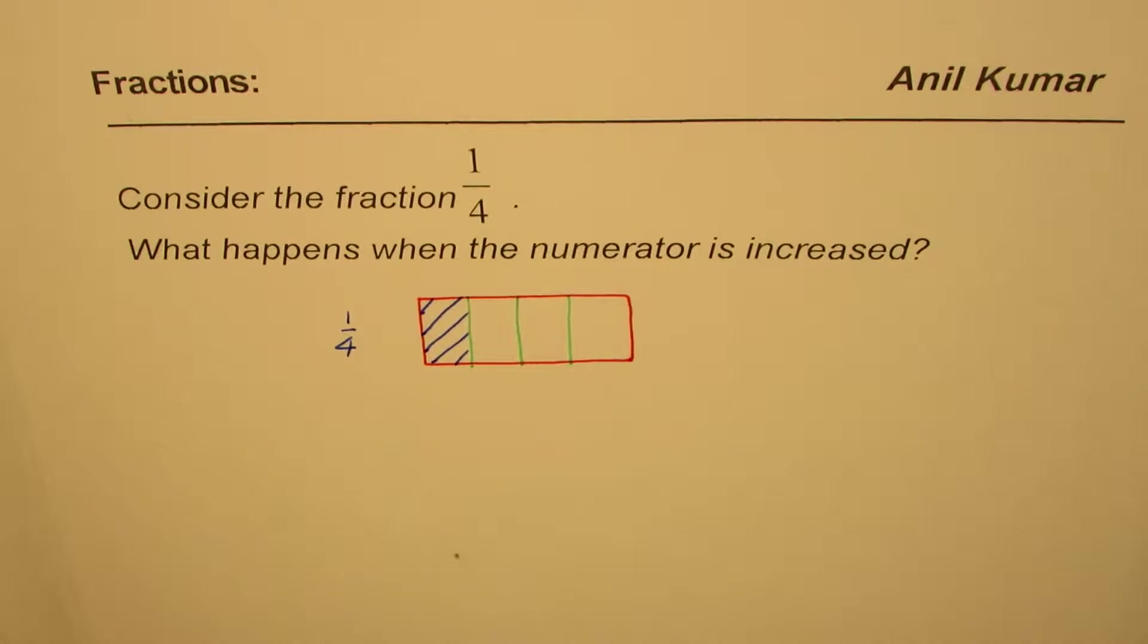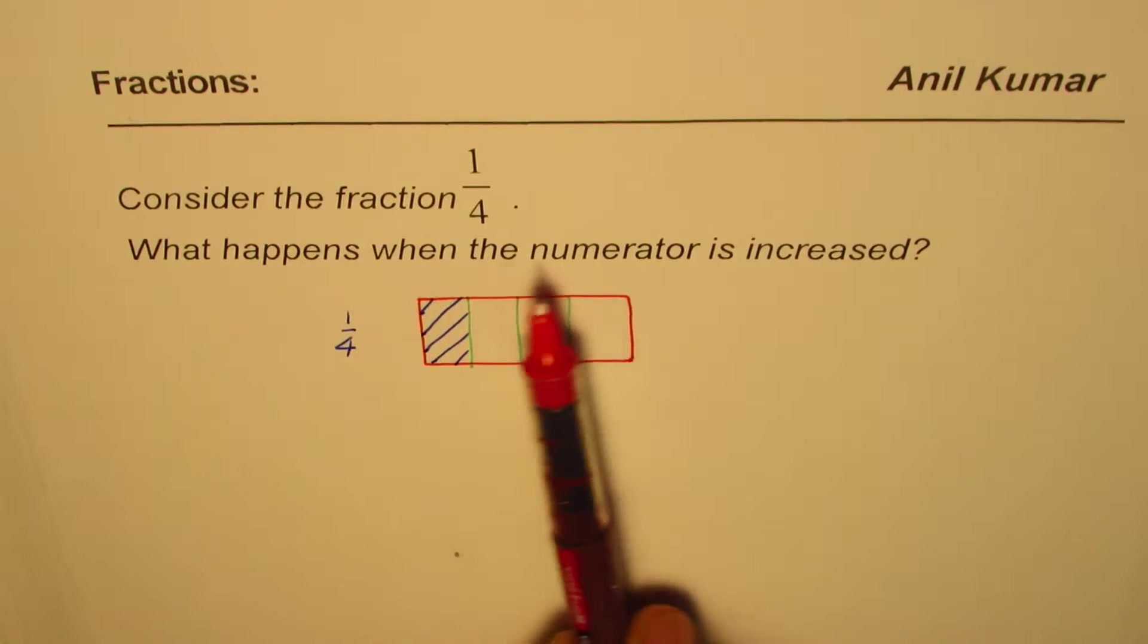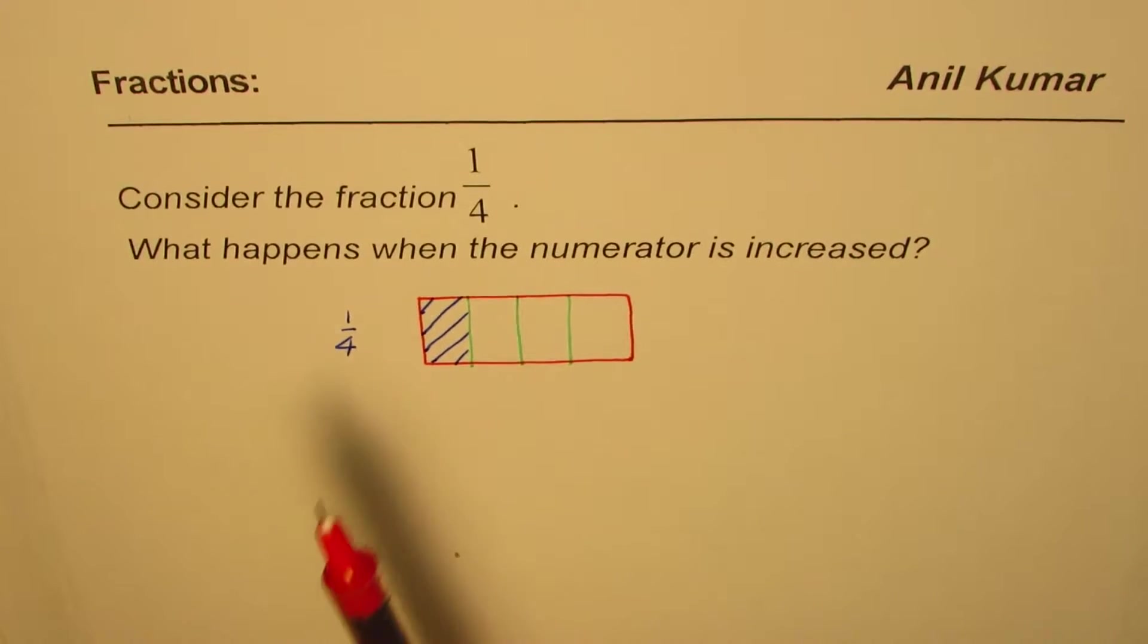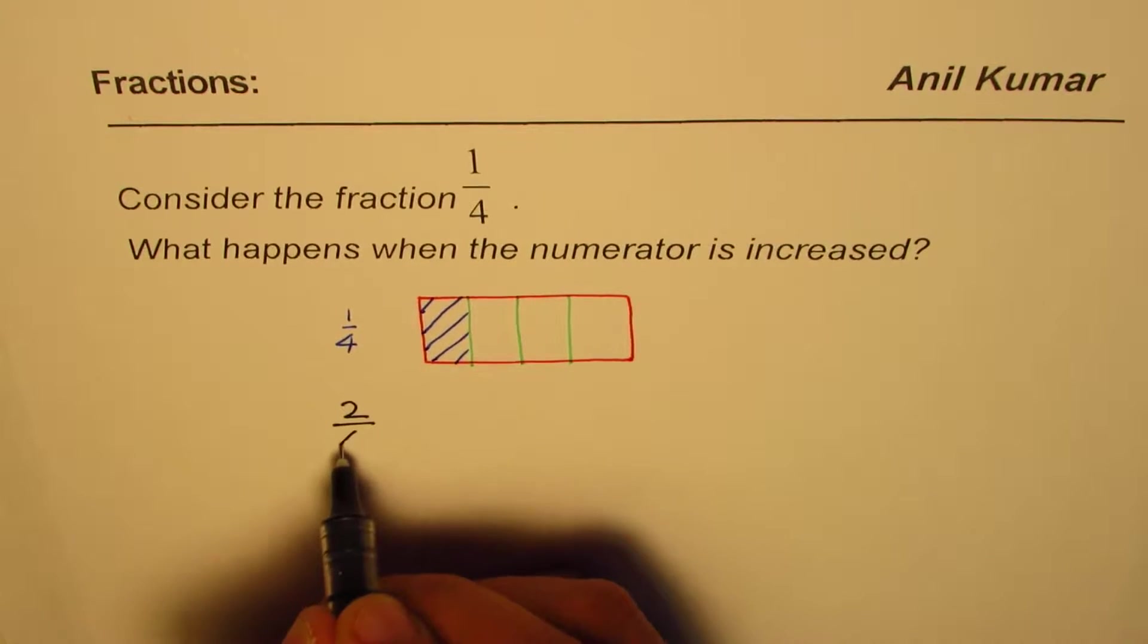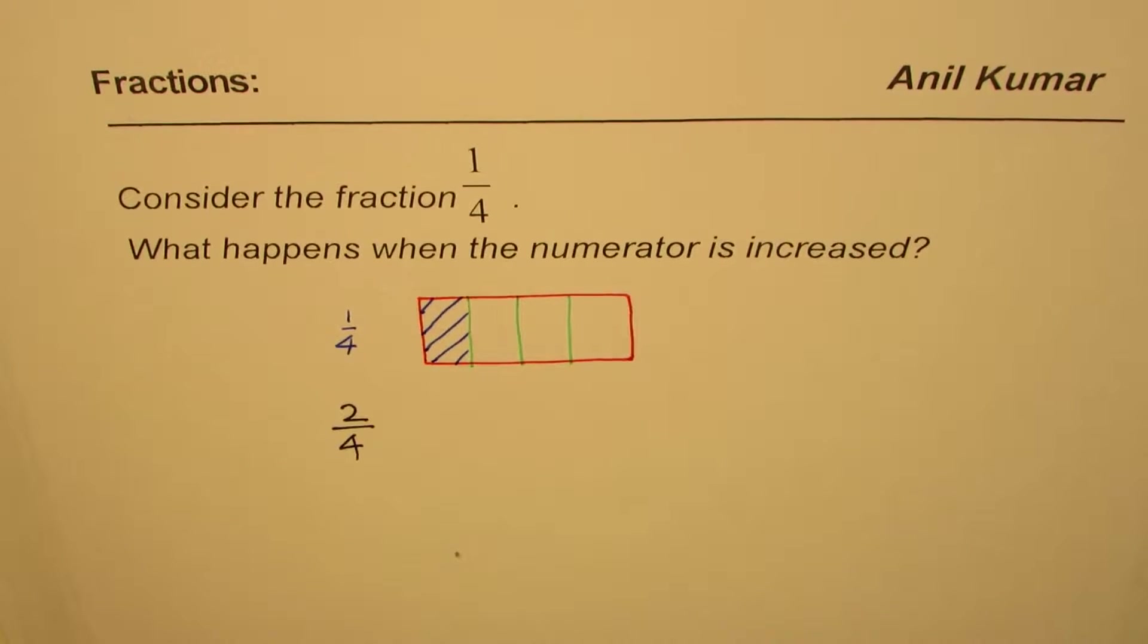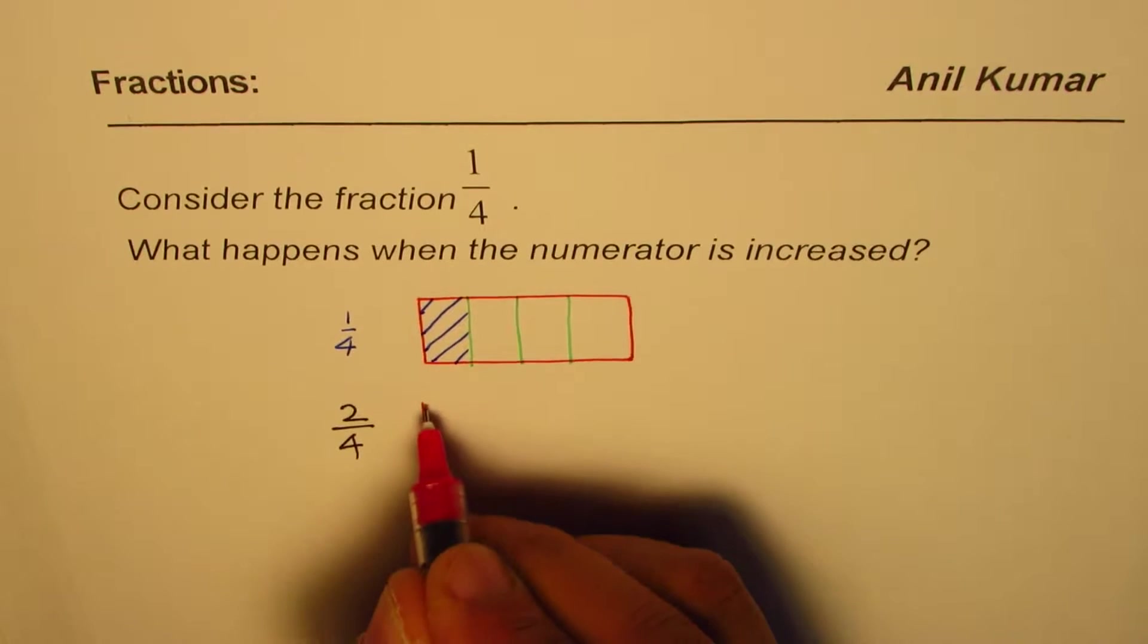Now the question is, what happens when the numerator is increased? Now, instead of 1, if I say, well, this time you will get 2 out of 4. Not just 1, but 2 out of 4. Then what happens? Will your share increase or decrease? This is what we need to check.